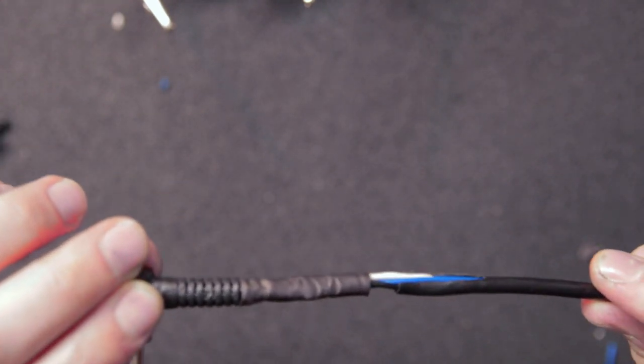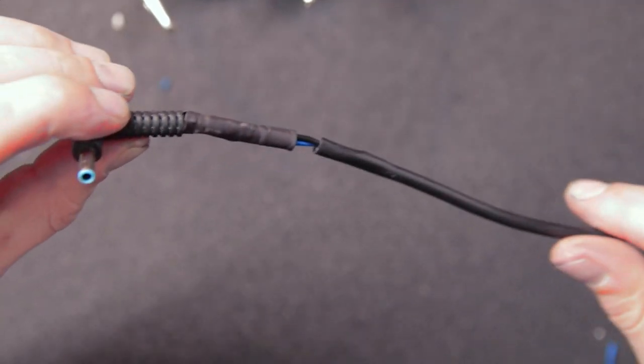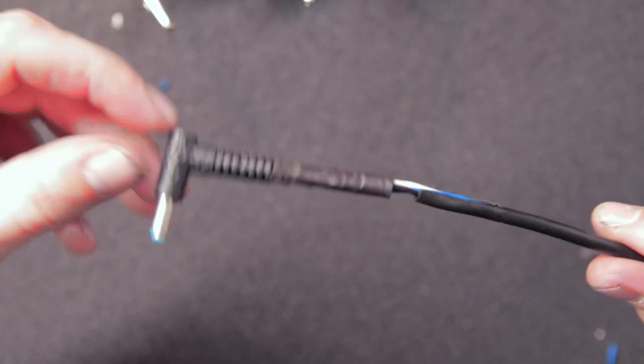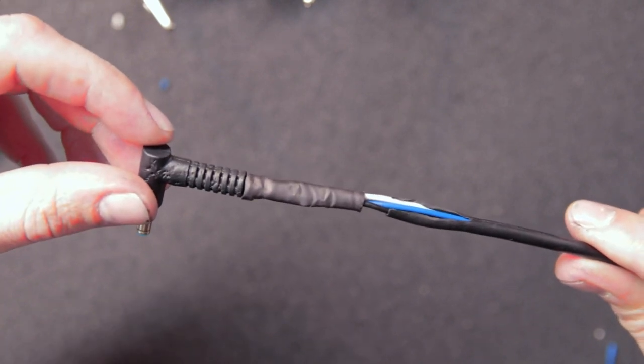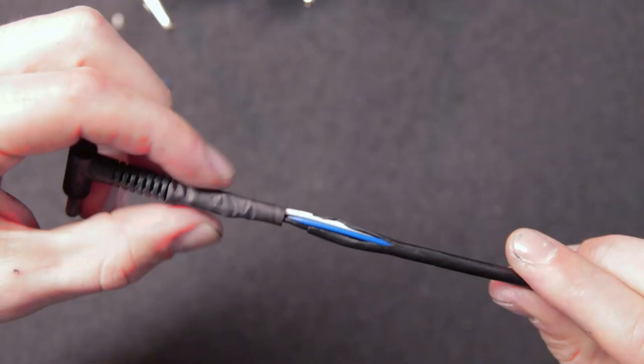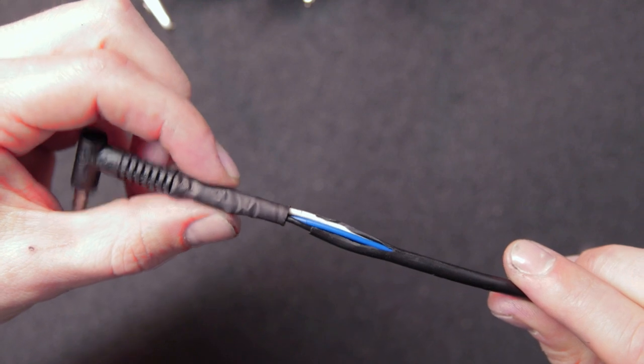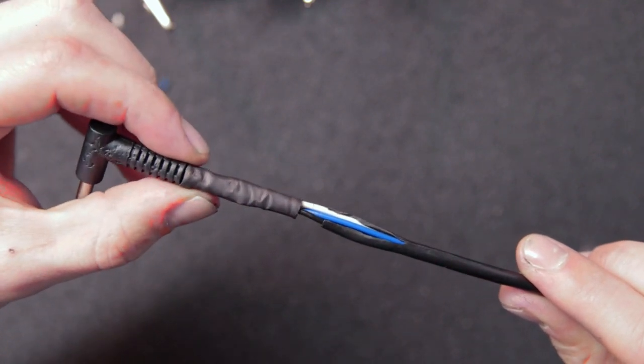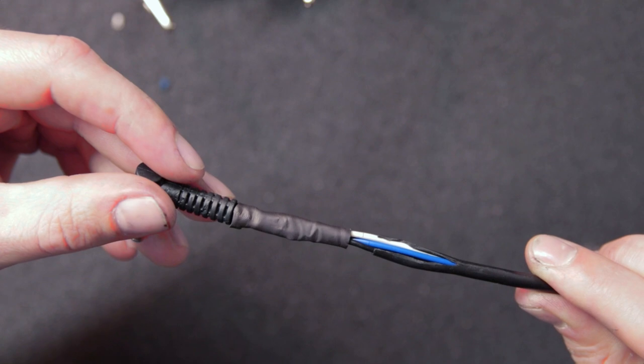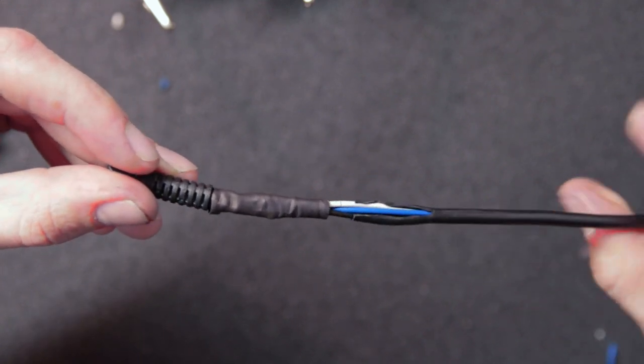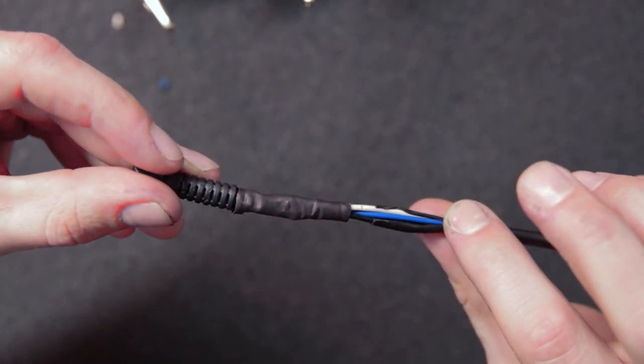So mistake number two, the heat shrink tubing that I used on here should have been a little bigger and compensate for the electrical tape. So I just barely fit this over that bundle, but it's there. It'll get the job done. I'm going to set up my heat gun so we can shrink this and get the other two to shrink up around here.